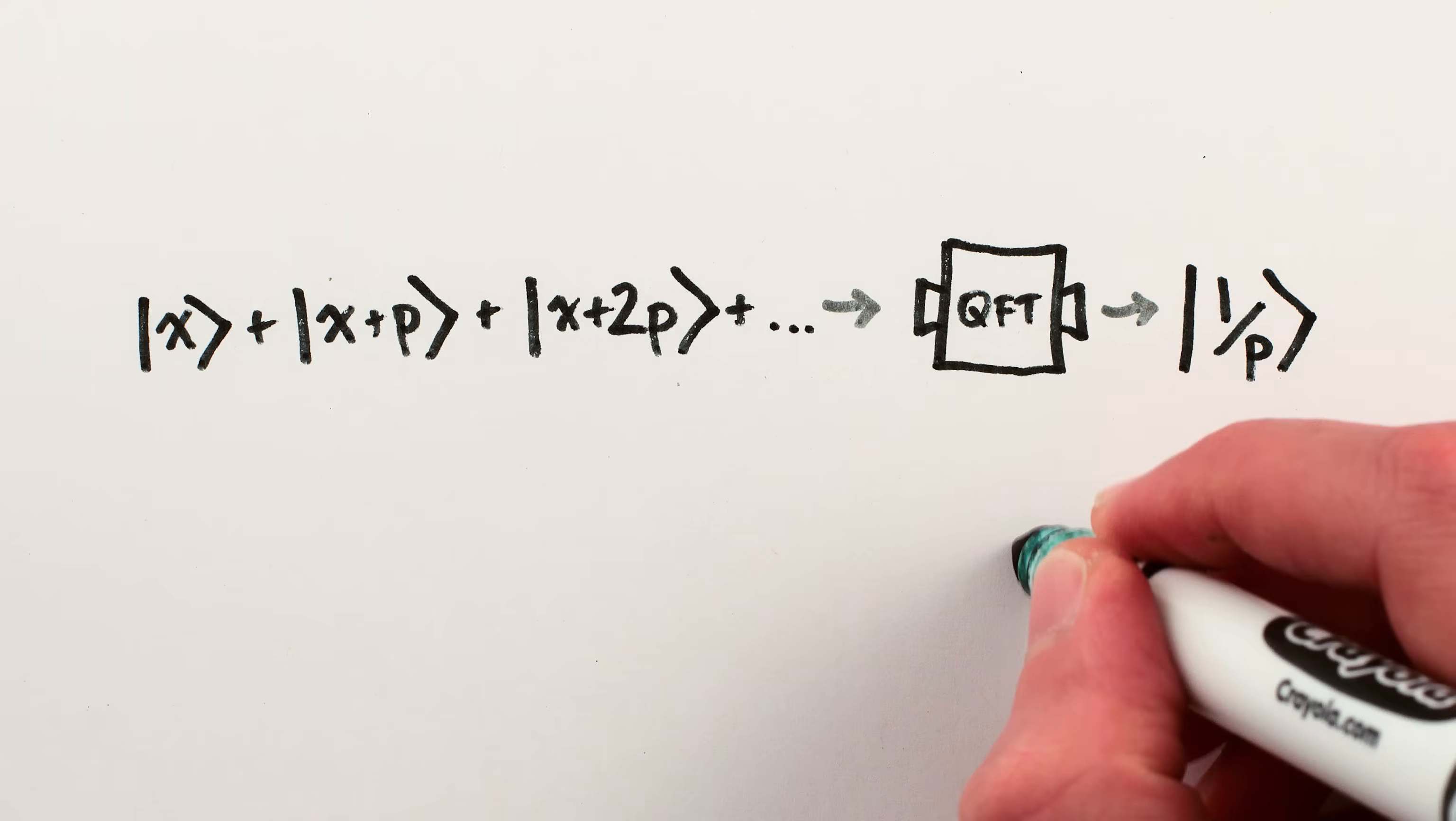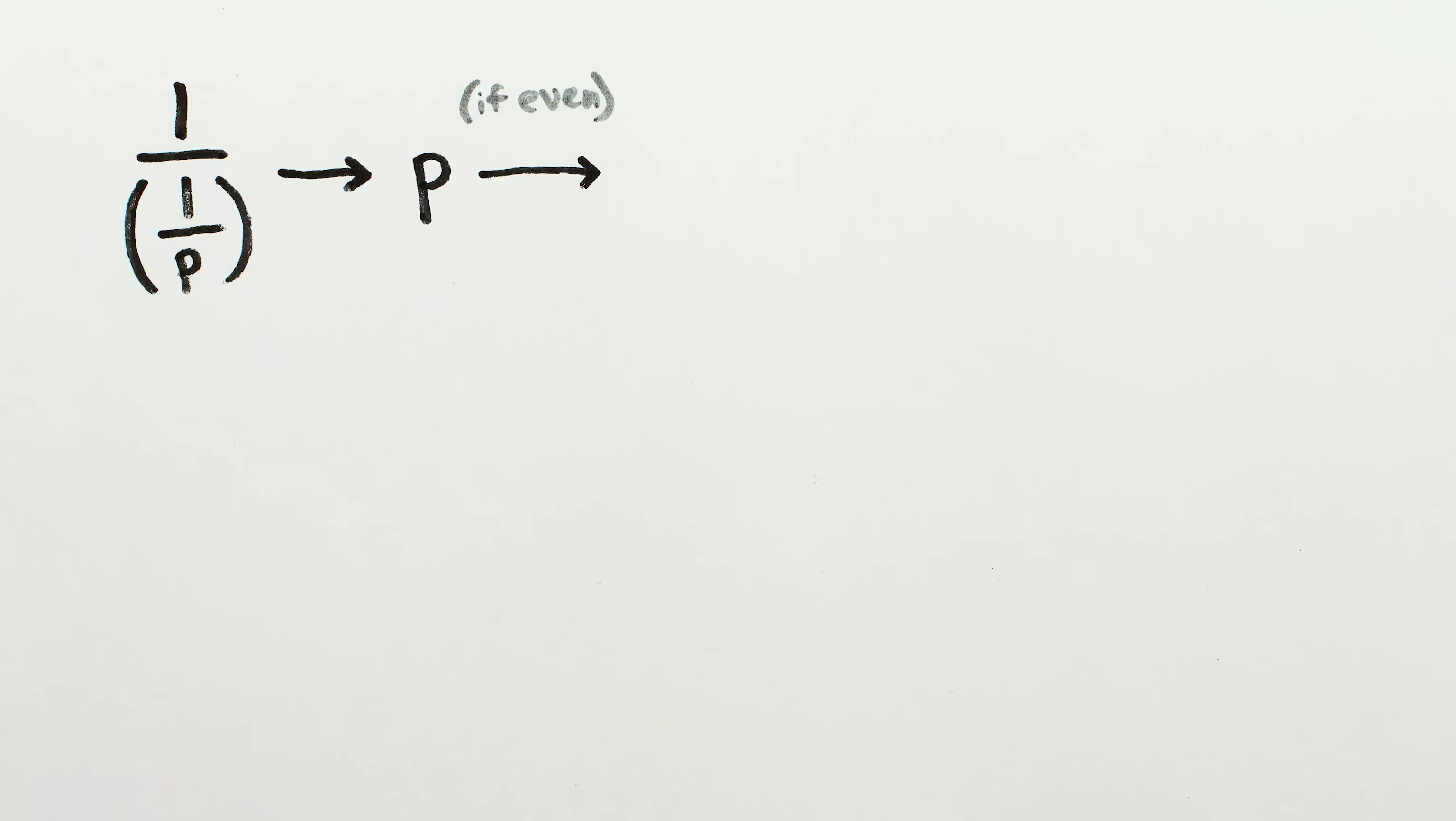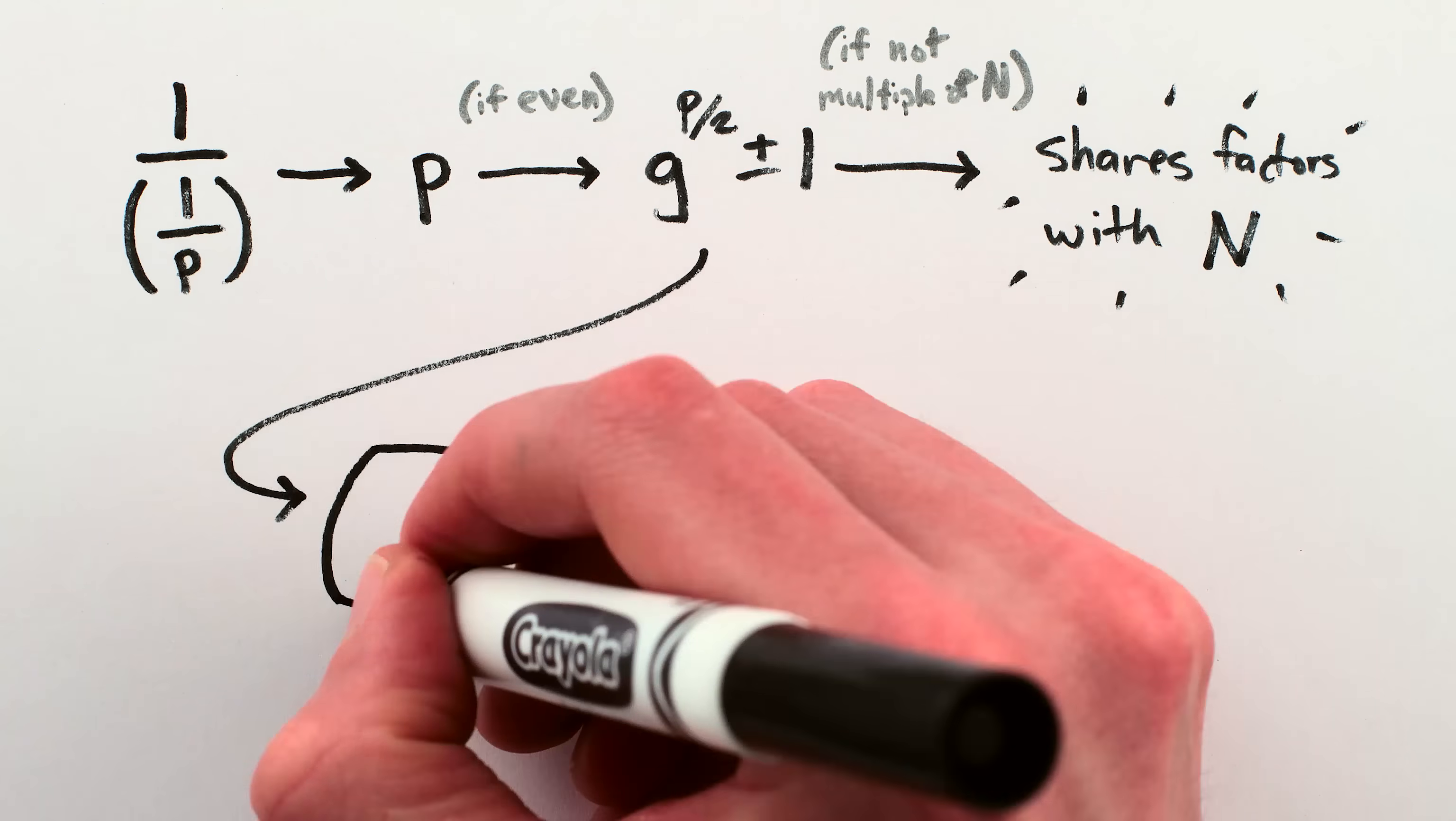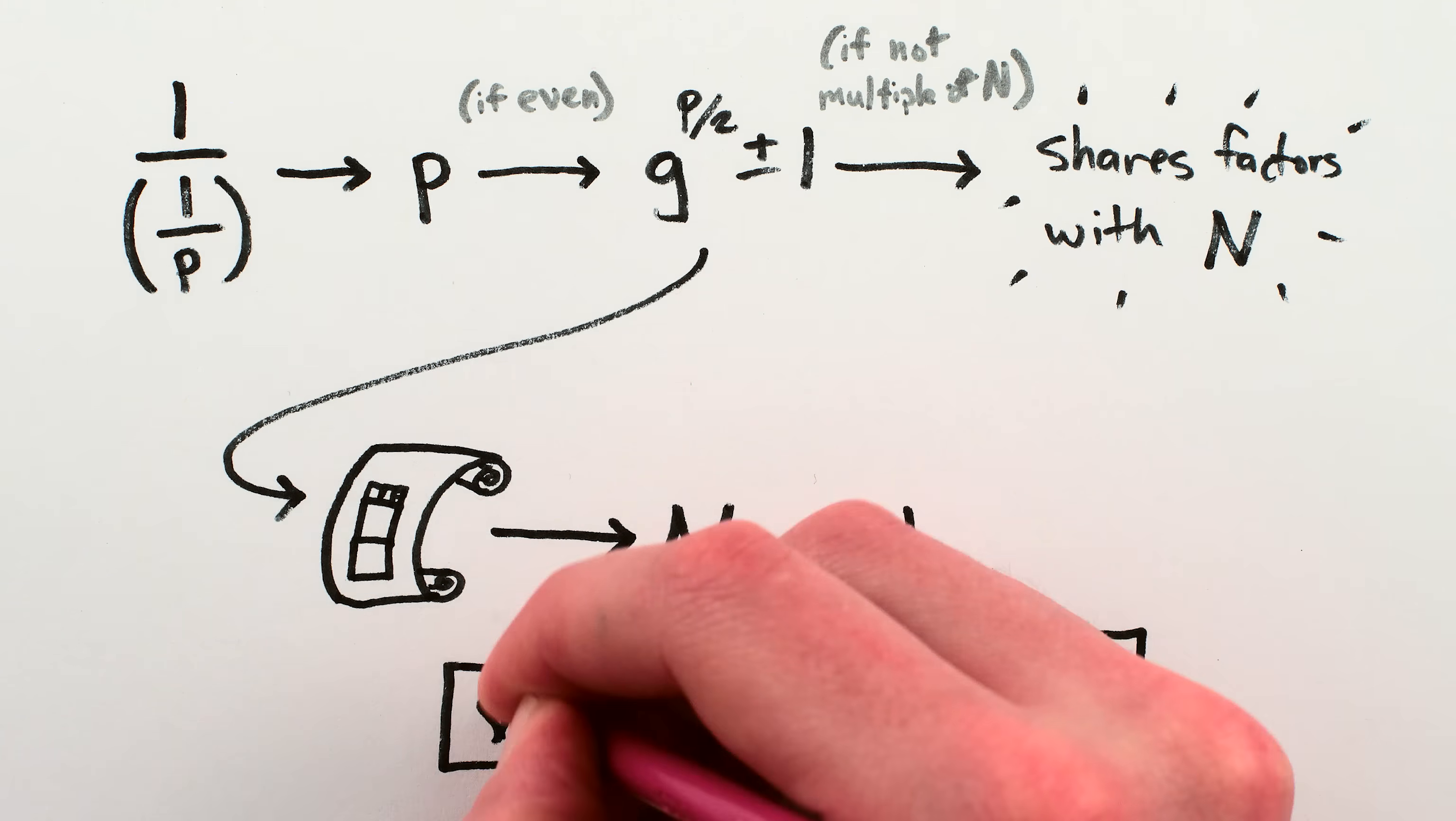All the rest destructively interfere. And so the quantum computer is left in a state of 1 over P, which we invert to find P, and as long as P is even, we can now finally raise our guess to the power of P over 2 and add or subtract 1. And as long as we don't get an exact multiple of n, we're guaranteed to have a number that shares factors with n. And therefore we can use Euclid's algorithm to quickly find those factors, and thus we can finally take the encrypted data and decrypt it.